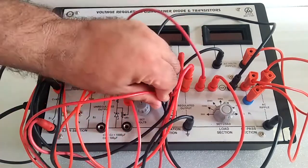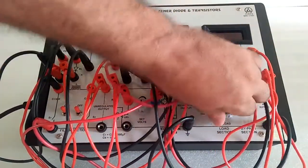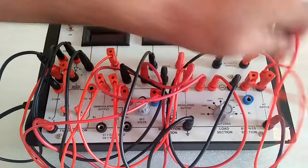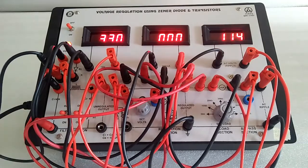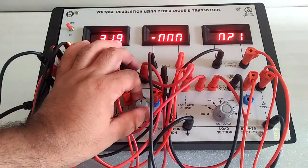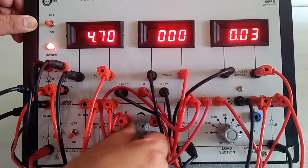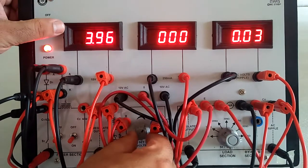First remove this, switch on the supply, and turn on the filter section. Now you can see, with the help of this potentiometer, we can regulate or set the voltage on the voltmeter as per our requirement.